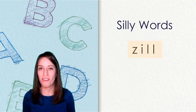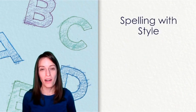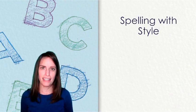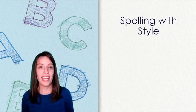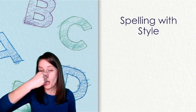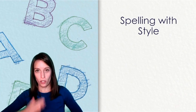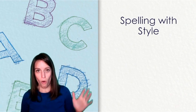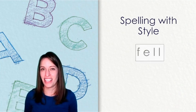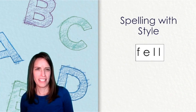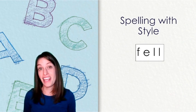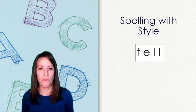Excellent job decoding those silly words. Now, we are going to do some spelling with style. This is when you get to use some kind of silly or fancy voice to say the letters in the word to spell the word. You can use your underwater voice or your robot voice or your opera voice to spell the word. Let's look at this first one.